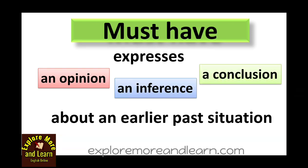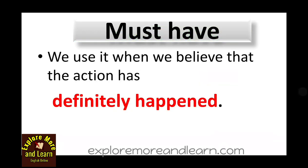Now about must have: must have expresses an opinion, an inference, or a conclusion about an earlier past situation. It expresses a sure guess — a conclusion — because you are very much sure about something which has happened in the past. You use must have when you make a sure guess or an inference about a past action, and we use it when we believe that the action has definitely happened — when you are one hundred percent sure.